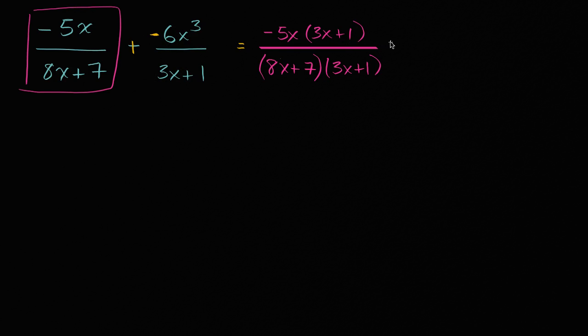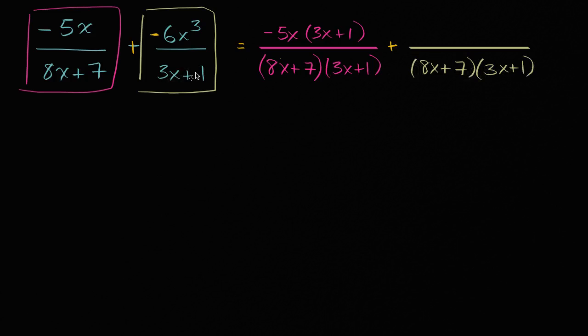And so I could say this is going to be plus, and let me do this in green. Our common denominator we already established is just the product of our two denominators. So it is going to be 8x plus 7 times 3x plus 1. Now if we multiply the denominator here was 3x plus 1, we're multiplying it by 8x plus 7. So that means we have to multiply the numerator by 8x plus 7 as well. 8x plus 7 times negative 6x to the third power. Notice 8x plus 7 divided by 8x plus 7 is 1. If you were to do that you would get back to your original expression right over here, the negative 6x to the third over 3x plus 1.